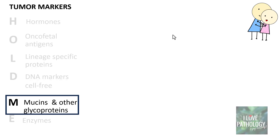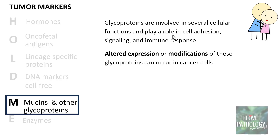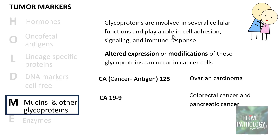Moving on to M — mucins and other glycoproteins. Glycoproteins are involved in various cellular functions including cell adhesion, signaling, and immune responses. They can show altered expression or modifications in some cancer cells, which is utilized as an identification marker. For example, CA-125 (cancer antigen 125) is typically elevated in ovarian carcinomas; CA-19-9 is elevated in colorectal and pancreatic cancers; and CA-15-3 is typically elevated in breast cancers.